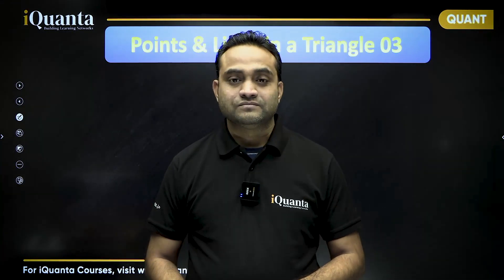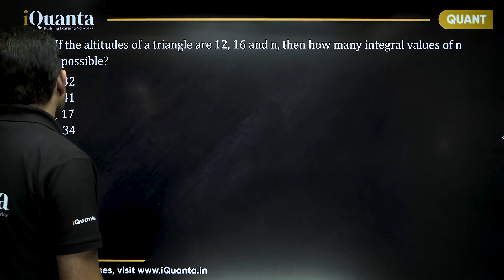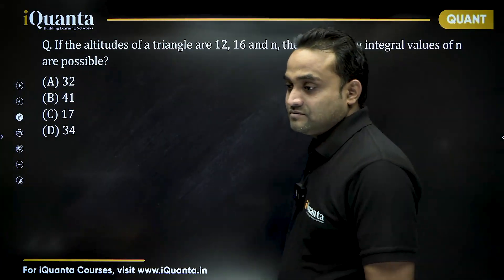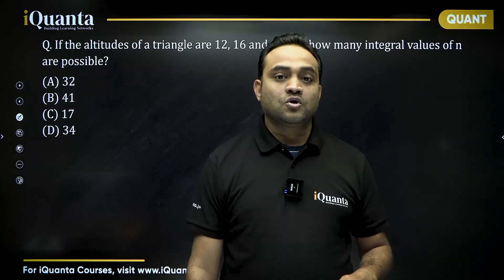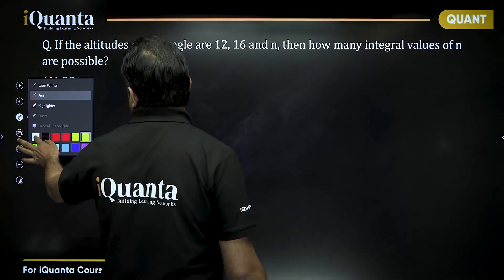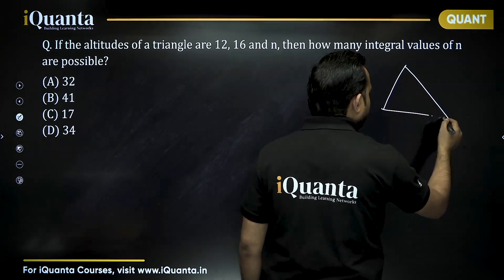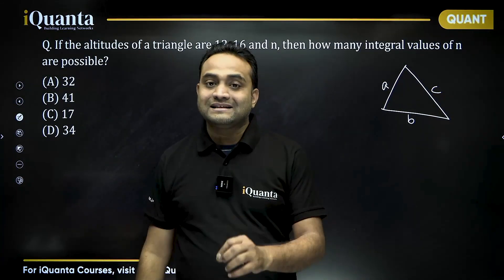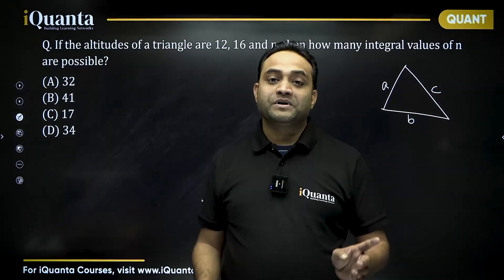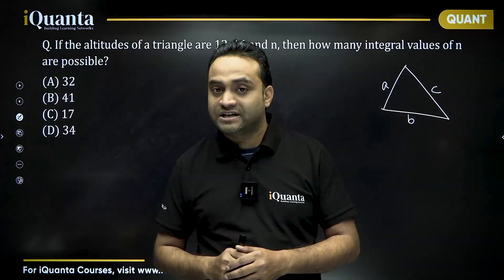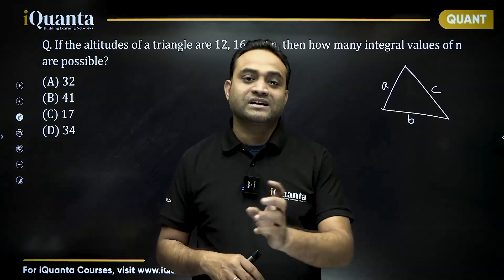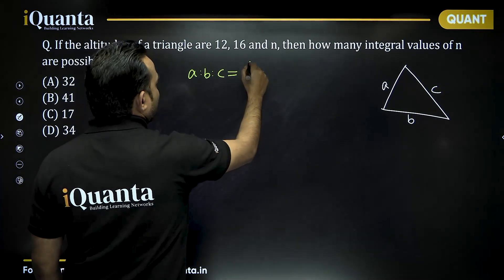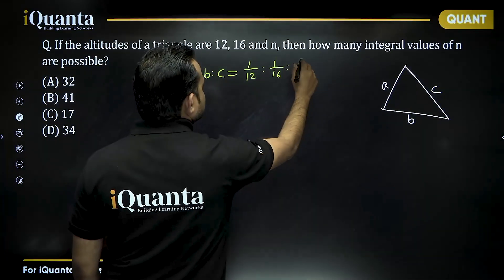Now let's go to the questions. First question: if the altitudes of a triangle are 12, 16, and n, how many integral values of n are possible? We know that in a triangle, if the side lengths are a, b, and c, then side lengths are inversely proportional to the altitudes, because side length times altitude equals area, and area is always constant. So the ratio a : b : c equals 1/12 : 1/16 : 1/n.